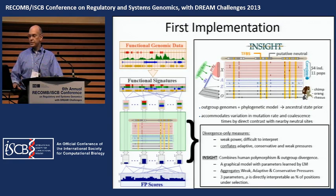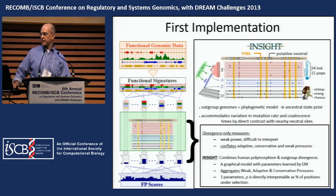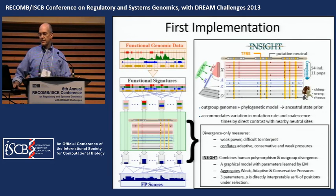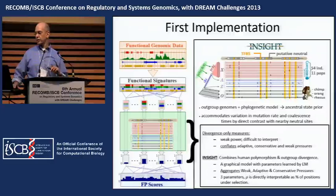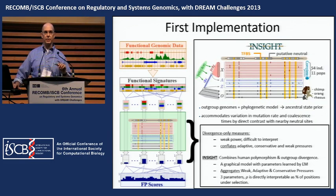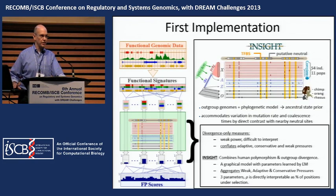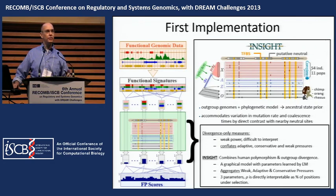We generated human polymorphism data from the deep sequencing of 54 unrelated individuals provided by the Complete Genomics dataset, a publicly available dataset. We derived divergence measures from the chimpanzee reference augmented by rhesus macaque and orangutan. The key things to keep in mind about INSIGHT: it accommodates local variation in mutation rate by contrast against nearby neutral sites; it aggregates, rather than offsetting or ignoring, adaptive, conservative, and weak selective pressures; and it infers only three parameters per class, one of which — rho — is directly interpretable as the fraction of positions in that class under selective pressure. We used the rho value for each class as the functional potential score.